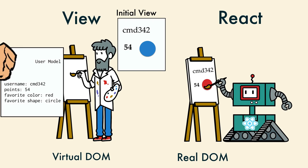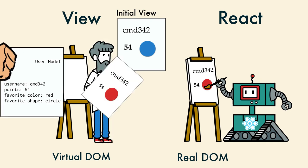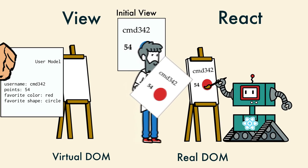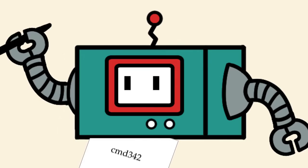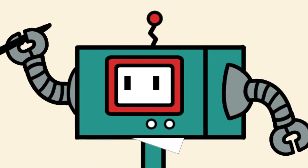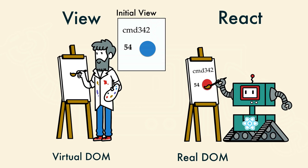When the model would bring him data, the view didn't really know what was on the real DOM, and he didn't want to know. He just sketched the picture as it was supposed to look, then passed it to React. React would quickly figure out that there were no differences. Everything was already painted correctly.